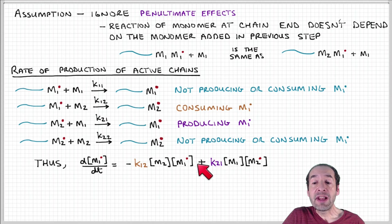Plus the rate at which they're produced by this third reaction, this other cross reaction where we have an active chain with monomer two and we add monomer one.